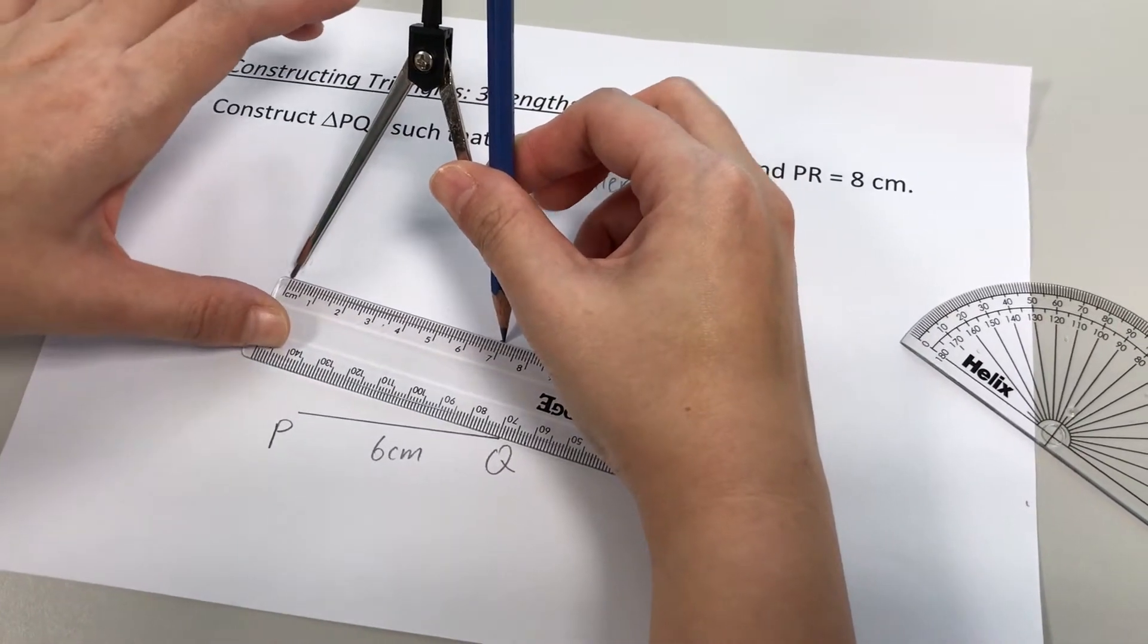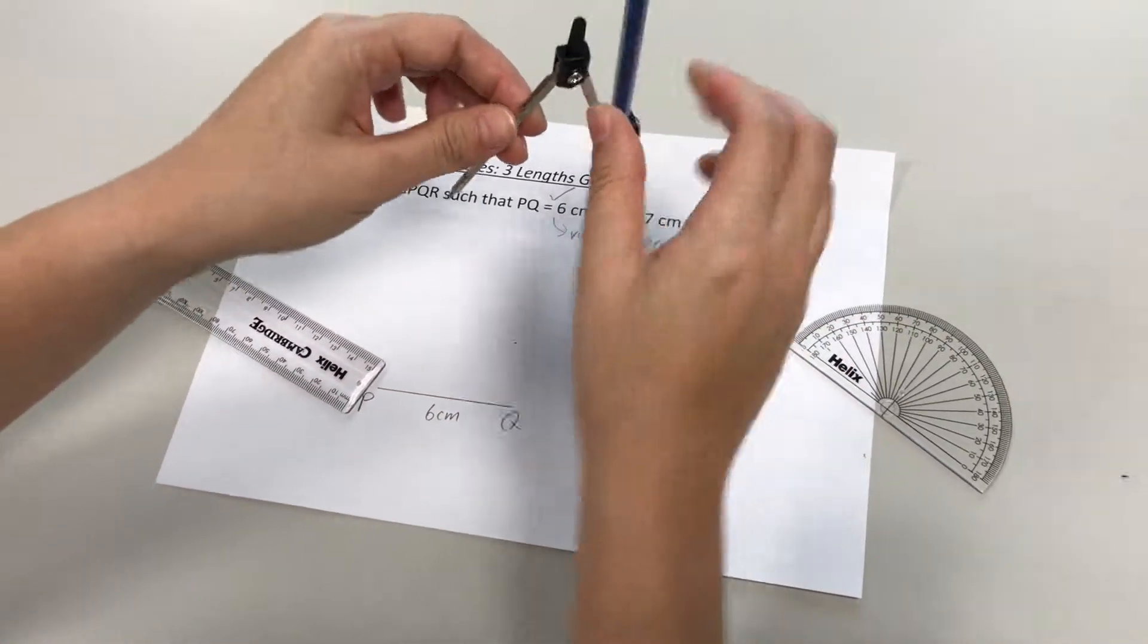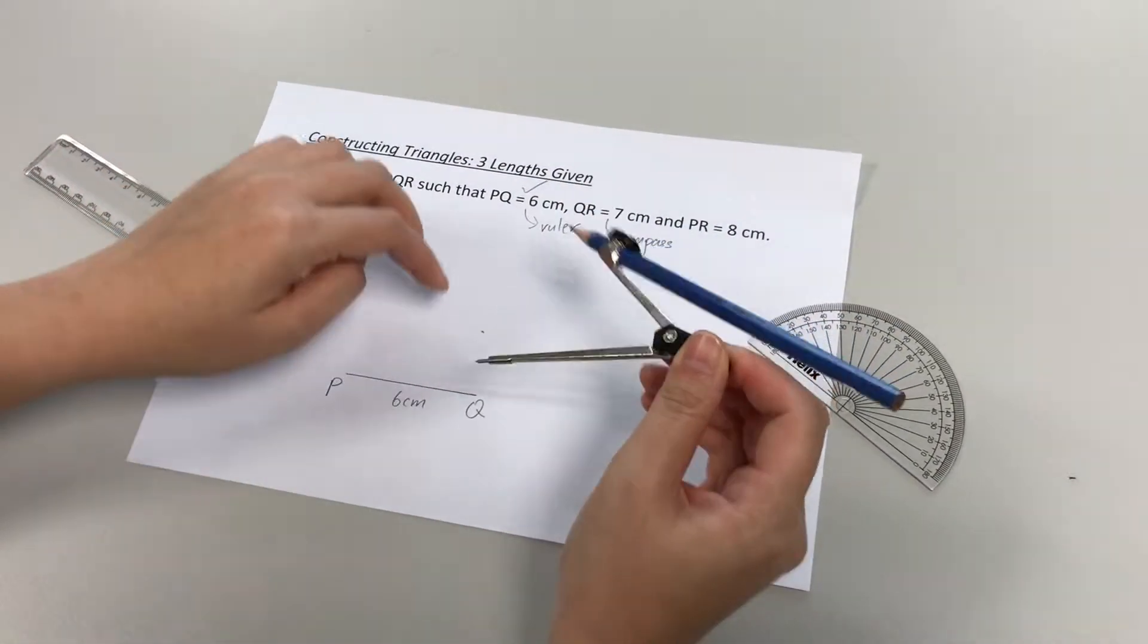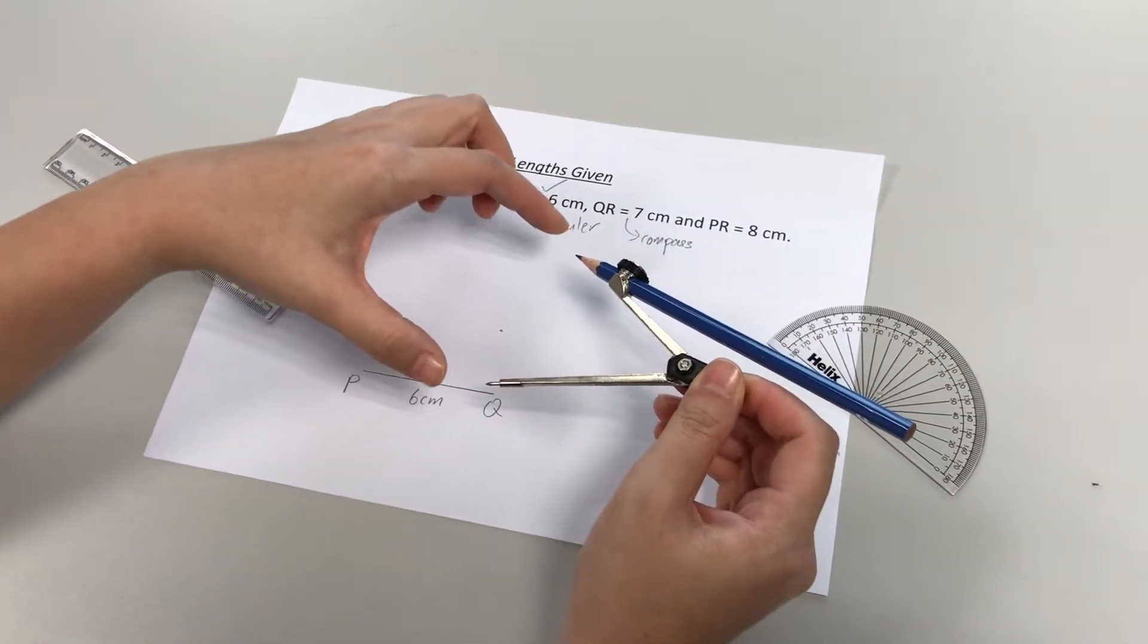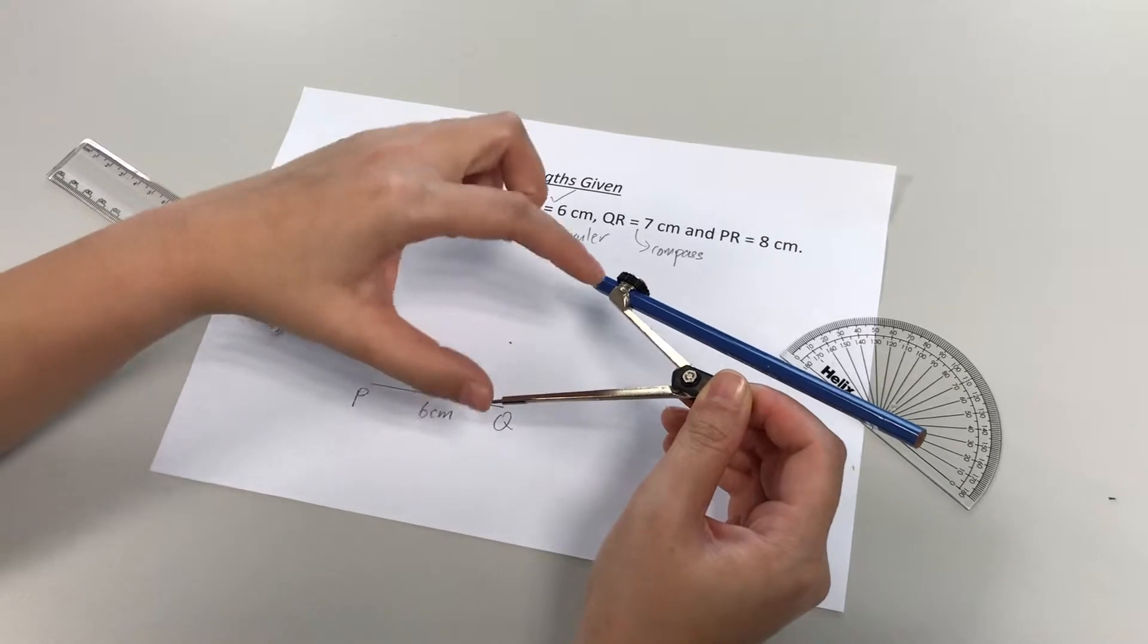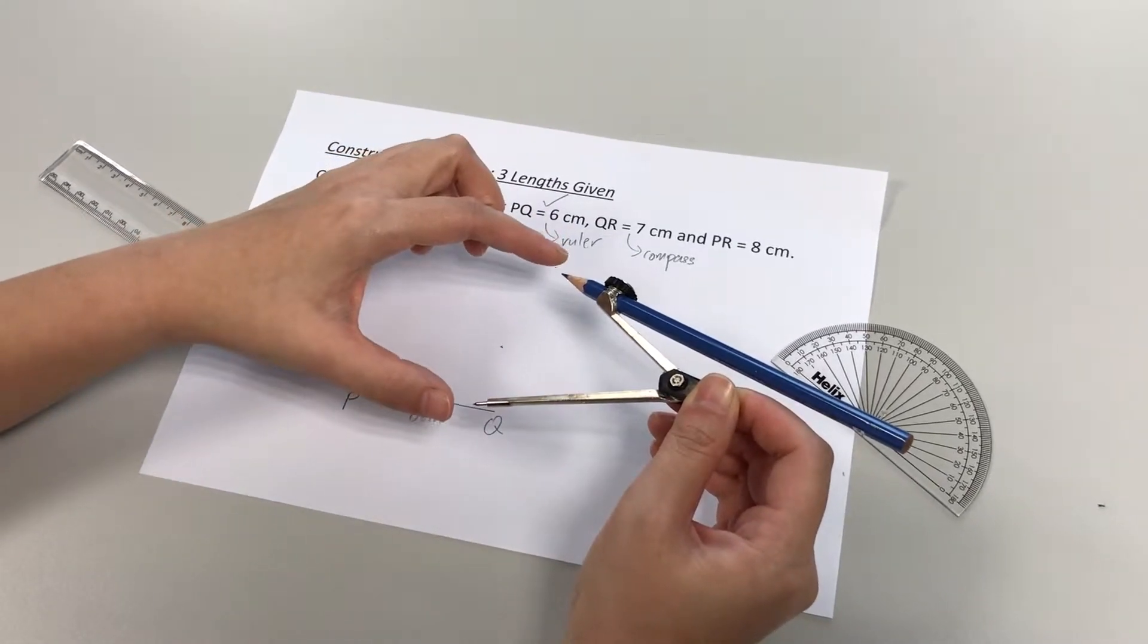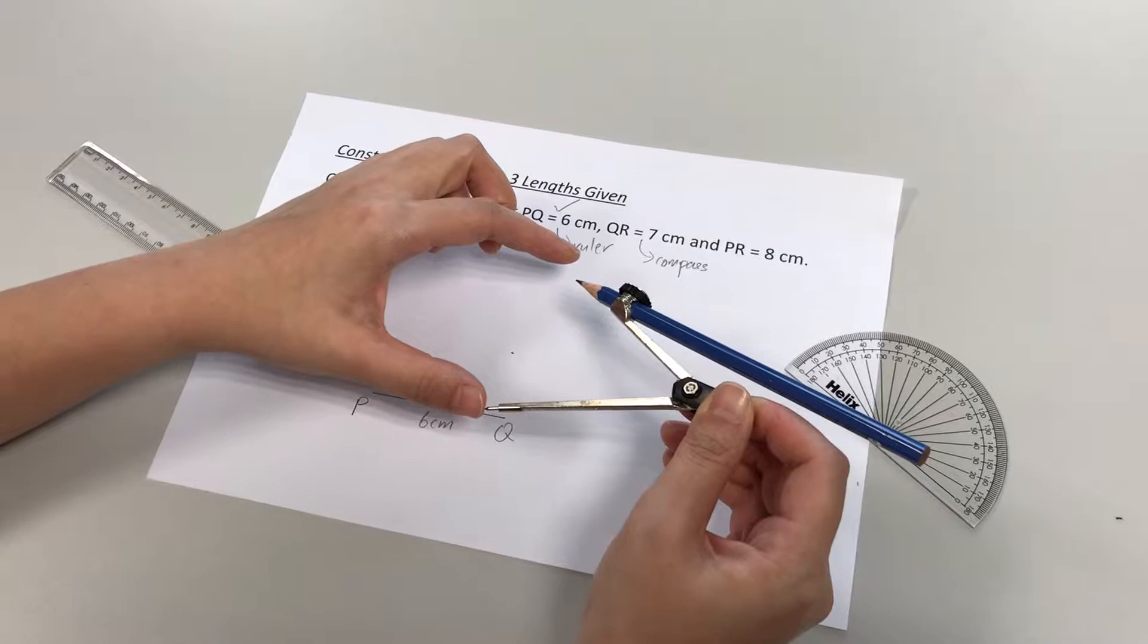Okay, that is how you prepare your compass to draw QR 7cm. Okay, it's important that after you have opened the compass to the length that you want, you do not move the compass anymore. So it's kept at a distance of 7cm.